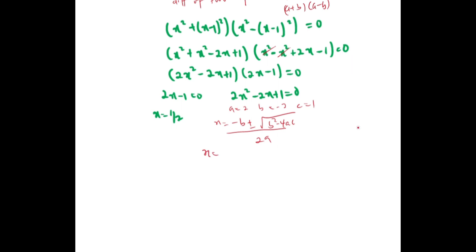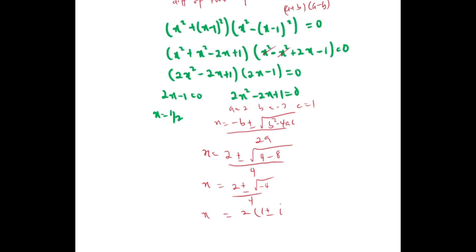Substituting in: negative negative 2 is 2, plus or minus root of negative 4, over 4. The square root of negative 4 is 2i, so we have 2 plus or minus 2i over 4, which simplifies to 1 plus or minus i over 2.